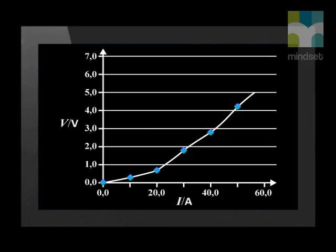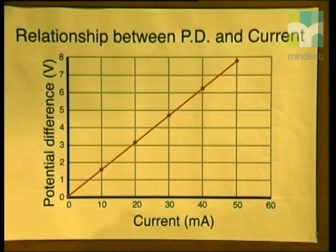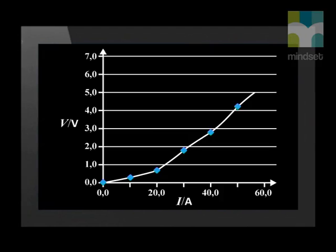This graph is very obviously not a straight line graph. What does this mean? In this experiment, Ohm's Law was not obeyed. A resistor that does not obey Ohm's Law is said to be non-ohmic. We know that if we plot a graph of potential difference versus current for an ohmic resistor we get a straight line, but for a non-ohmic resistor the graph is always curved.